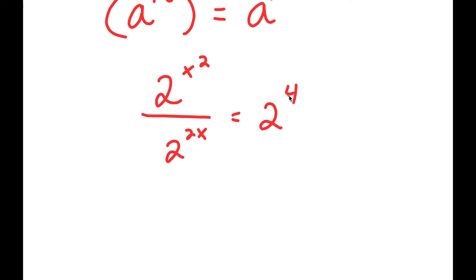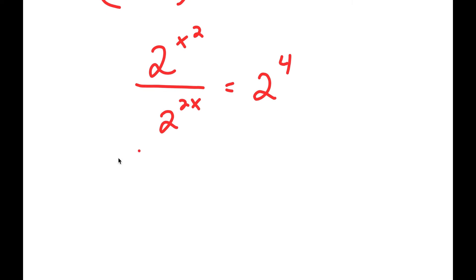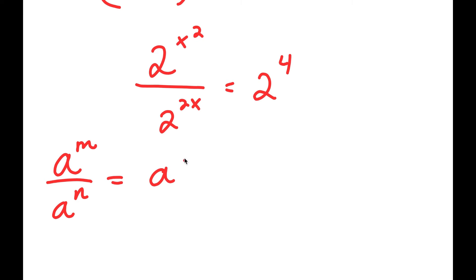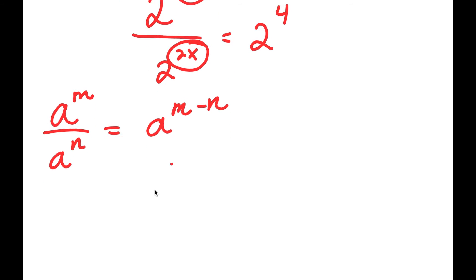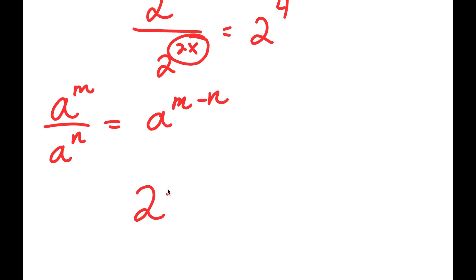And now from here, if I have something in the form a to the power of m over a to the power of n, this is equal to a to the power of m minus n. So in this case, m is x squared and n is 2x, so I get 2 to the power of x squared minus 2x is equal to 2 to the power of 4.